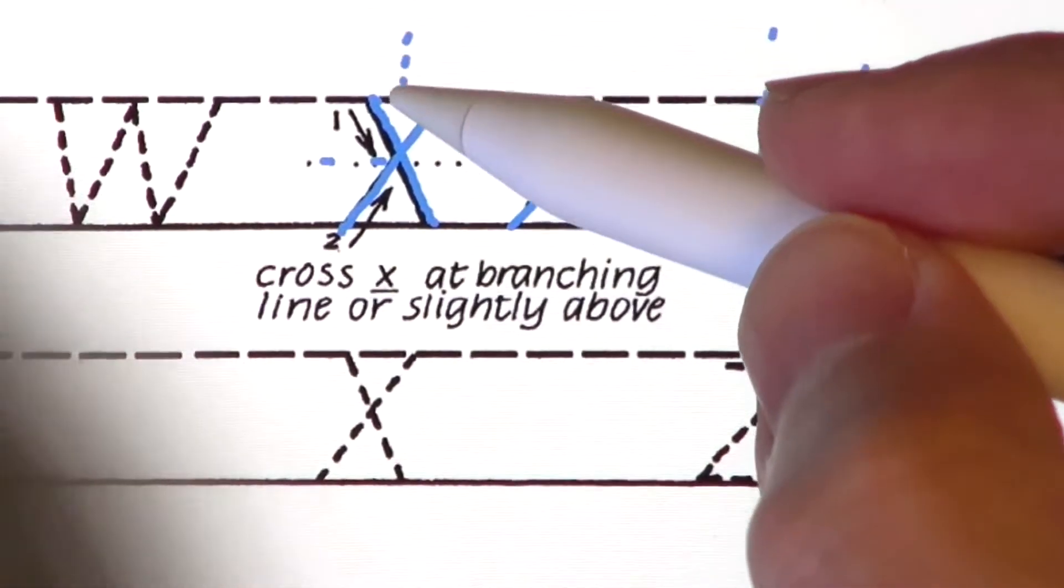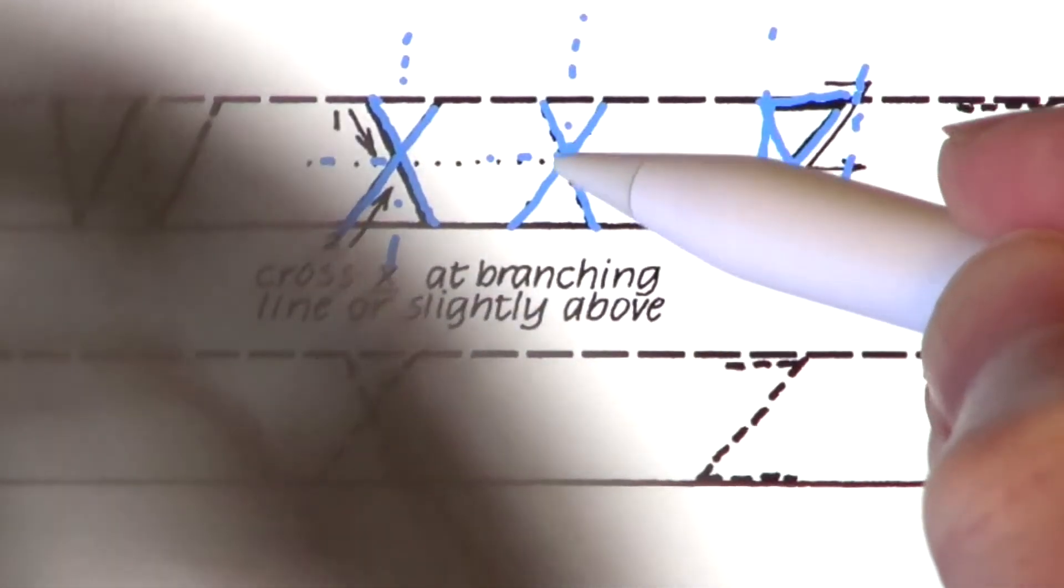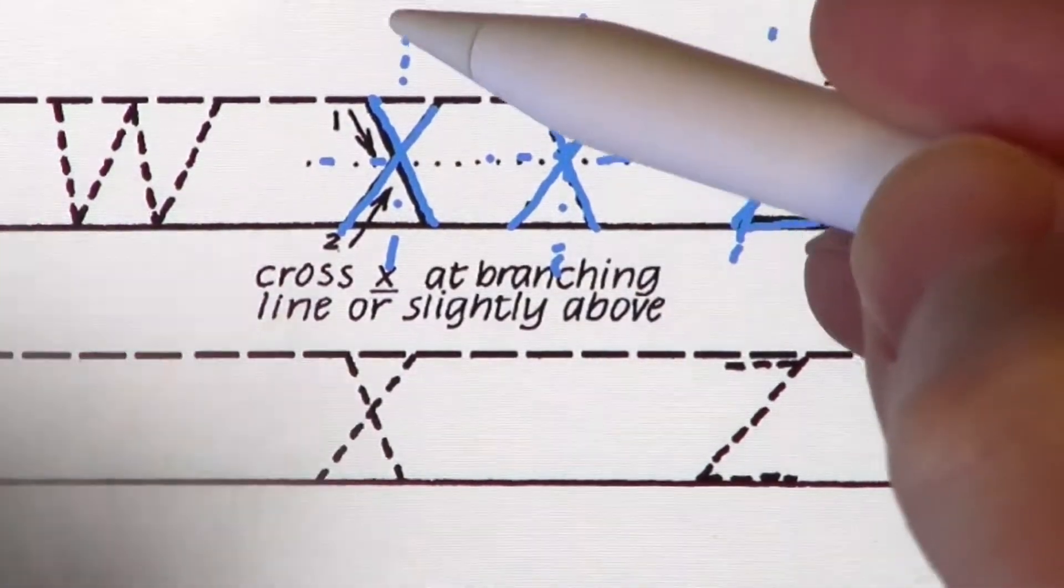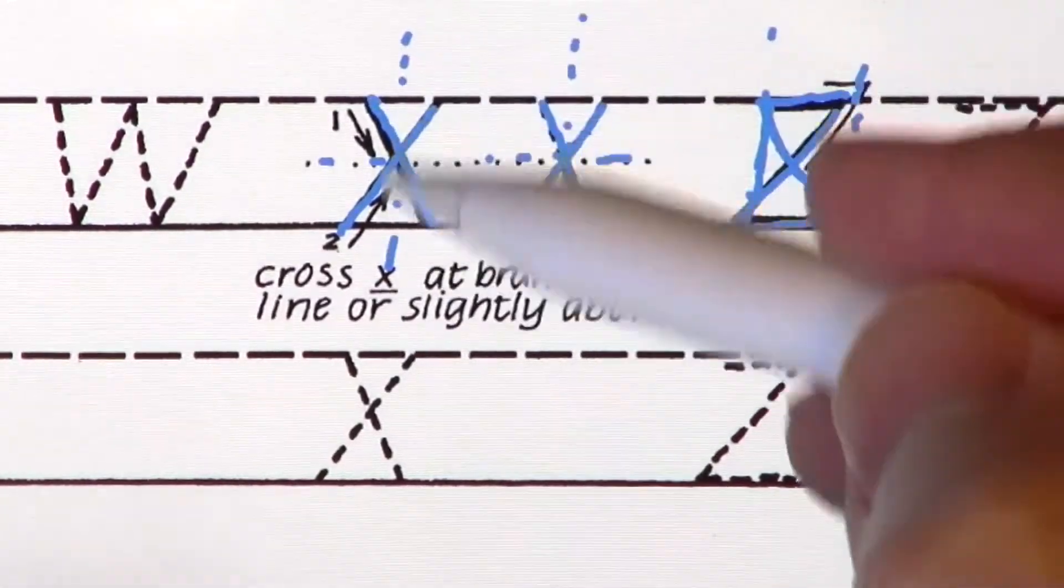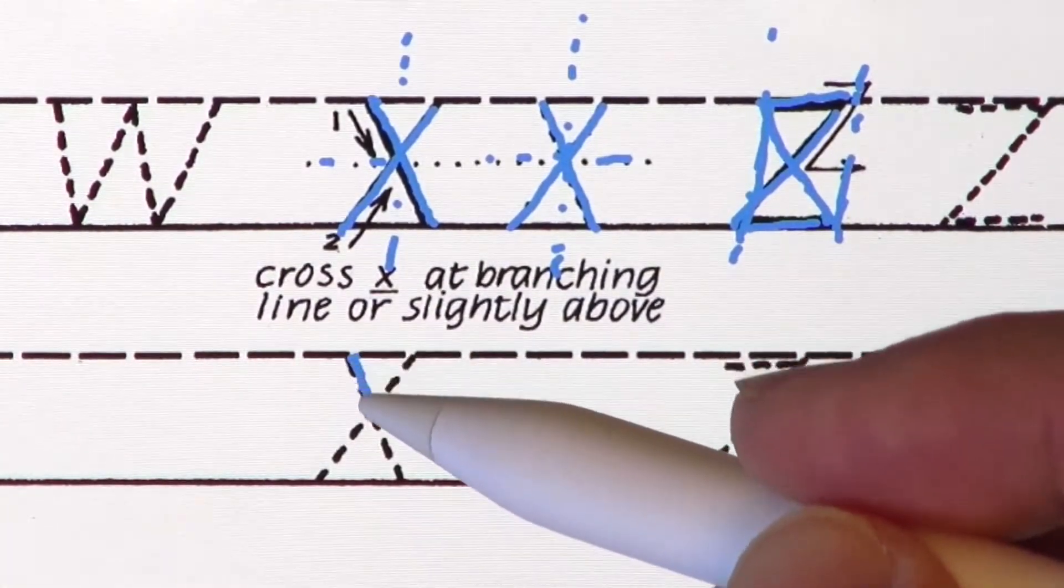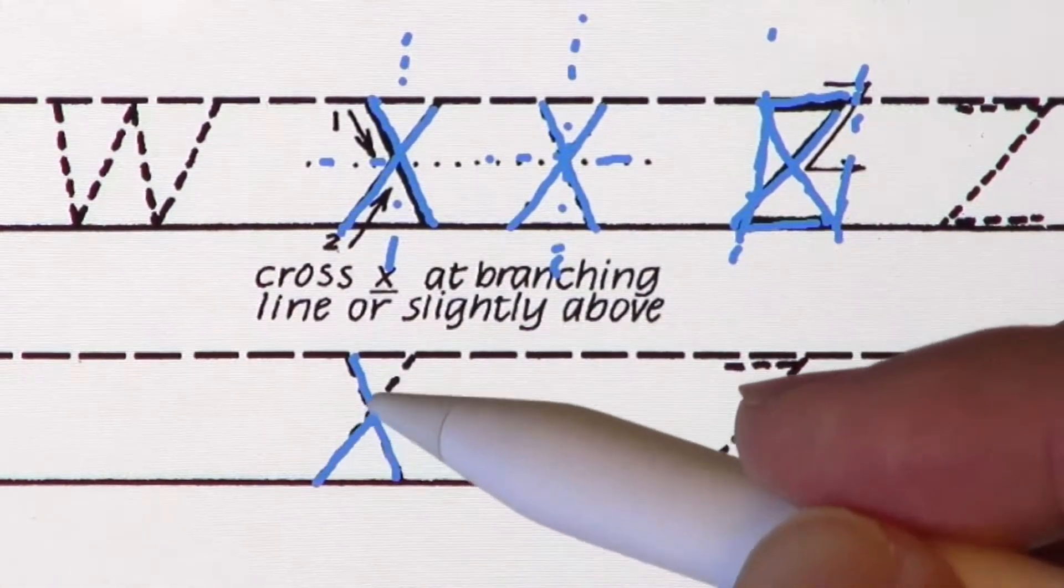Also, the slope is going to be consistent with the slope of the other letters. So this center line is going to be at a 5-degree slope. Let's copy again. One, two.